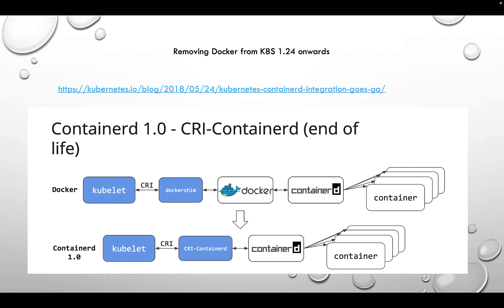How does that affect us? Normally if we are using a managed Kubernetes service like EKS or GKE, it is automatically taken care of by the provider. Instead of Docker, containerD is used — Docker and the docker shim have been removed, and now it's just CRI CTL and containerD.